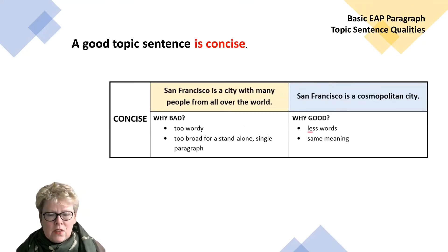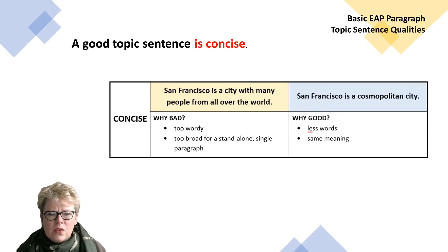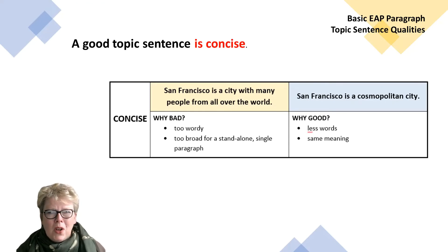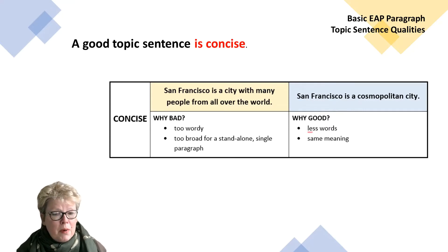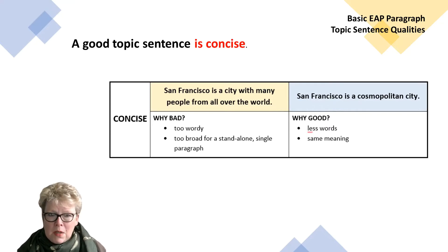A good topic sentence is concise — not too wordy. 'San Francisco is a city with many people from all over the world' is too wordy and too broad for a stand-alone single paragraph. The second sentence is much better: 'San Francisco is a cosmopolitan city.' It means the exact same thing — a cosmopolitan city is like Tashkent, with many people from all over the world. Less words, same meaning. It is concise.